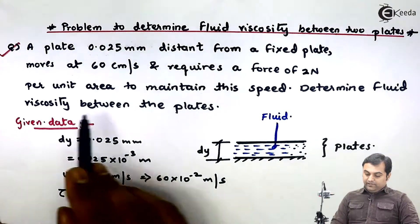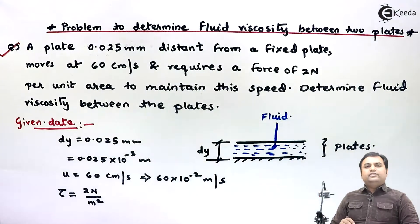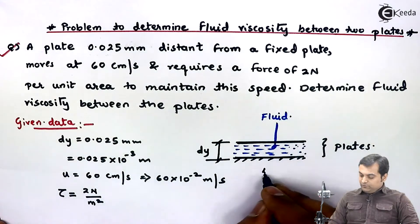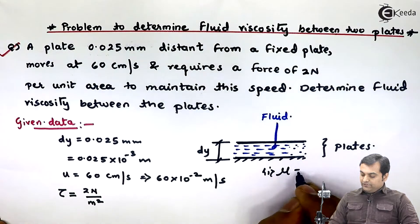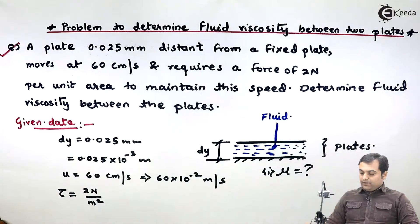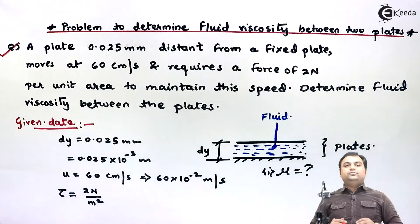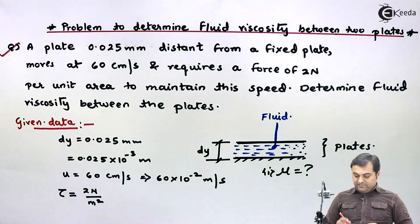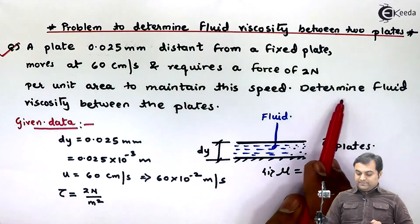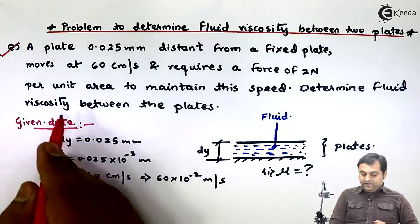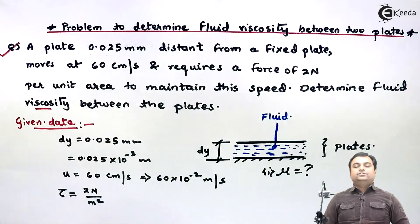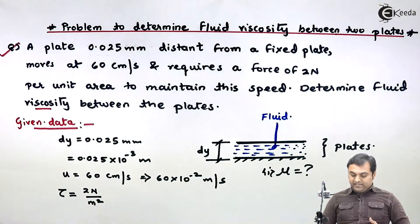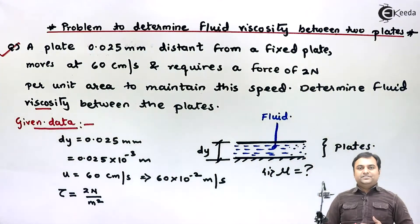Since they are saying only 'viscosity,' the meaning is we have to calculate dynamic viscosity mu. If kinematic viscosity were required, it would be specifically mentioned. Since only viscosity has been said, it means dynamic viscosity. With this data available, let us try to get the solution.